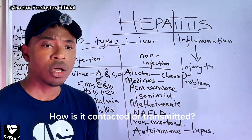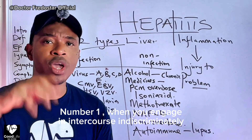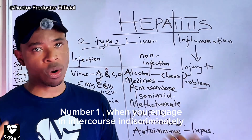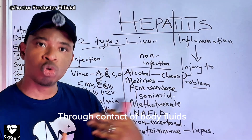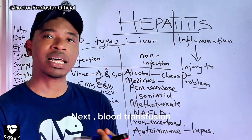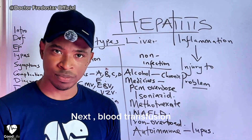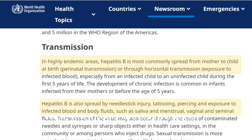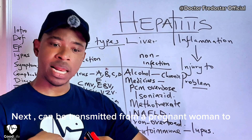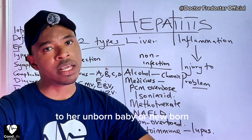How do you get hepatitis B? Number one — when you have unprotected sex, through contact of body fluids. Another one — blood transfusion. Another one — when you share sharp objects, like needles used by others that enter your body. Another one — a pregnant woman can carry it and give it to the baby.